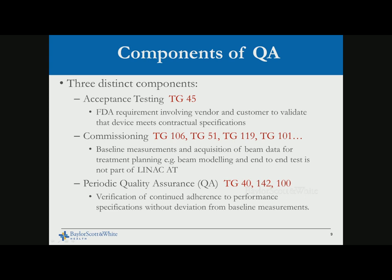The competence of QA involves three phases: acceptance testing, commissioning, and periodic quality assurance. Acceptance testing involves vendor and customer validating that the device meets contractual specifications. Commissioning comes after, with some overlap — it includes baseline measurement, beam data acquisition, beam modeling, and end-to-end testing. Periodic QA verifies there is no deviation from the baseline established during commissioning — what we do in daily, monthly, and annual quality assurance.